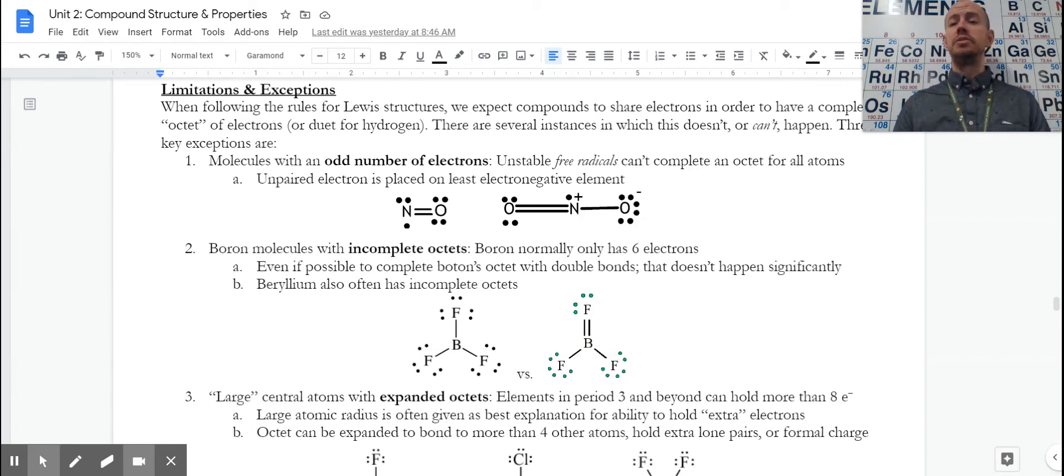So sometimes these odd numbers are very temporary. The other thing to note is that you definitely, if you end up with an odd number, want to double check, is your drawing supposed to be a polyatomic ion?